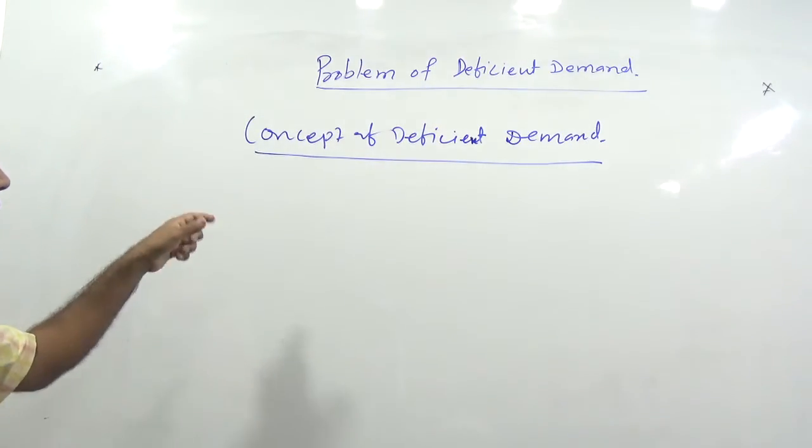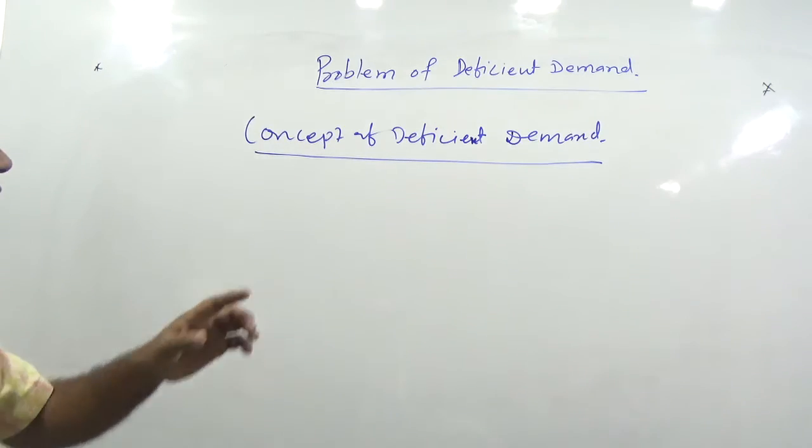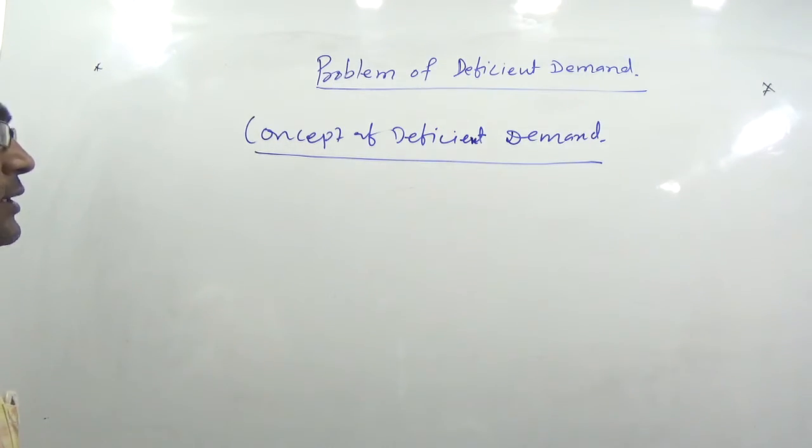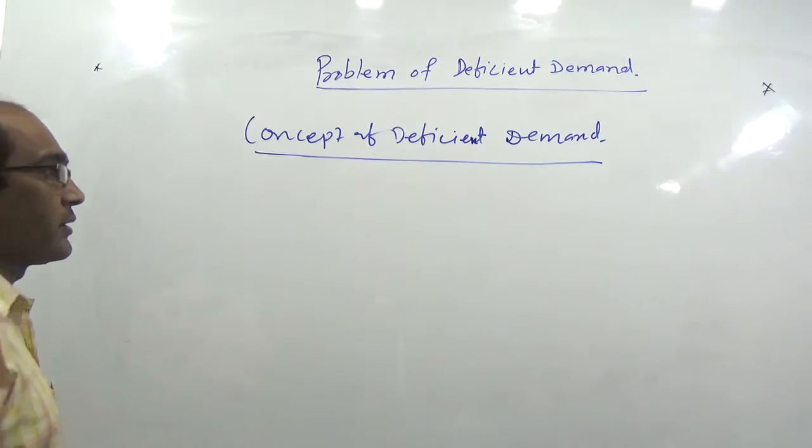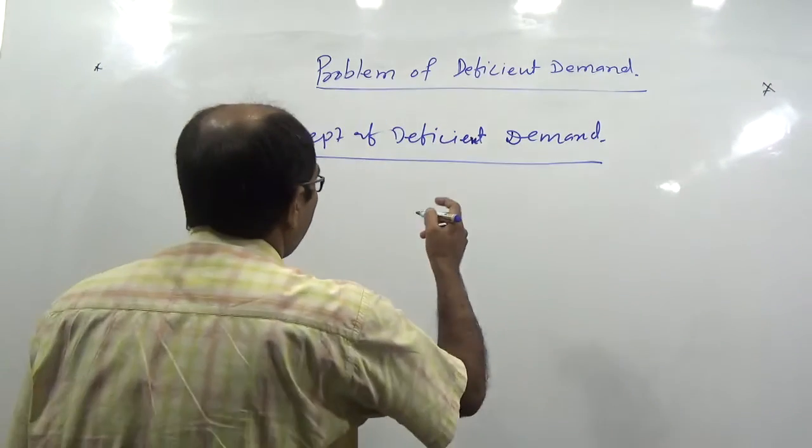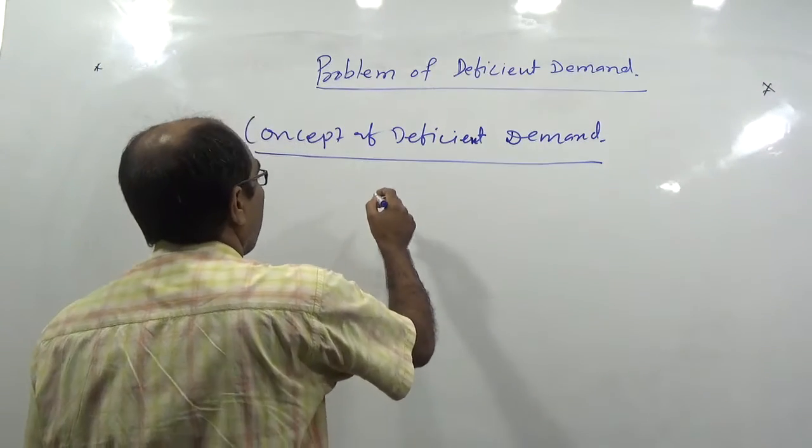What happens in the case of deficient demand? In the case of deficient demand, ADF is much greater than ADP.